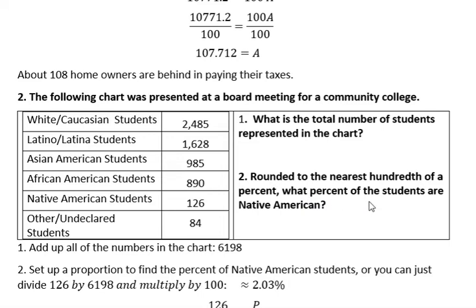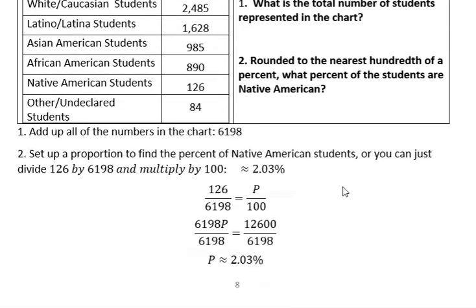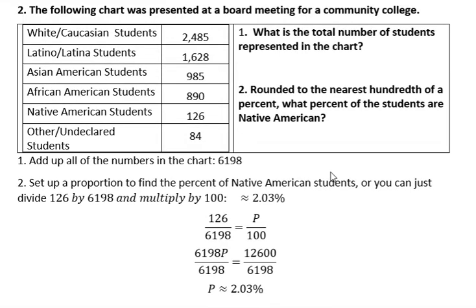Then it says: rounded to the nearest hundredth of a percent, what percent of the students are Native American? So we want to know what percent — we're missing the percentage. One easy shortcut: if you know how to solve a problem in a different, shorter way that always works — not something that works sometimes, but a legitimate method — then feel free to use it.